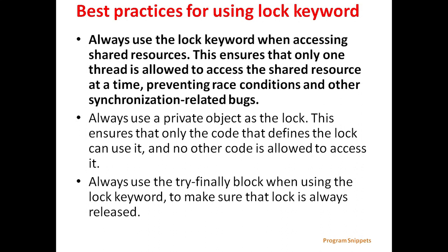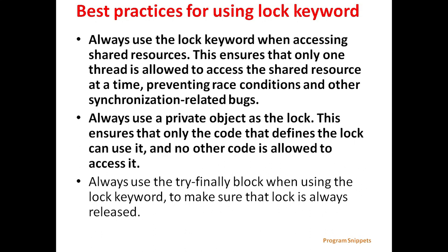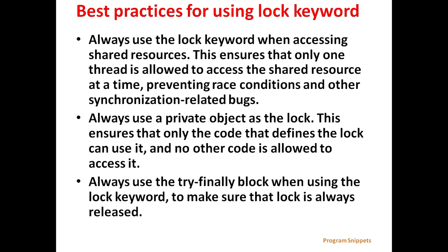Next we will see when to use the lock keyword. Always use the lock keyword when accessing shared resources, which ensures that only one thread is allowed to access the shared resource at a time — this prevents race conditions and other synchronization-related bugs. Always use a private object as a lock, ensuring that only the code that defines the lock can use it. Always use a try-finally block when using the lock keyword to make sure that the lock is always released.